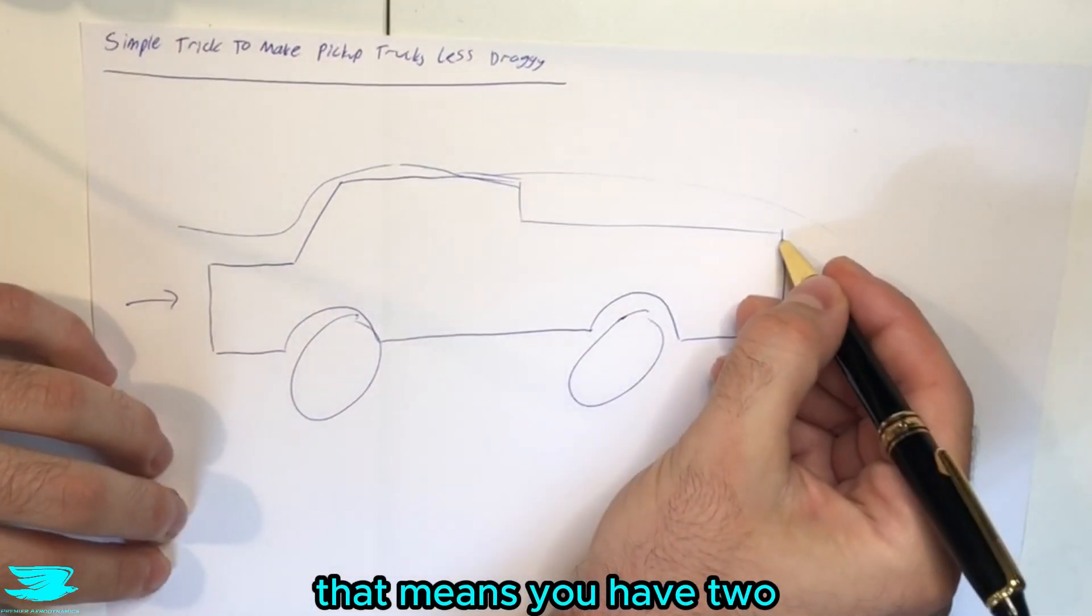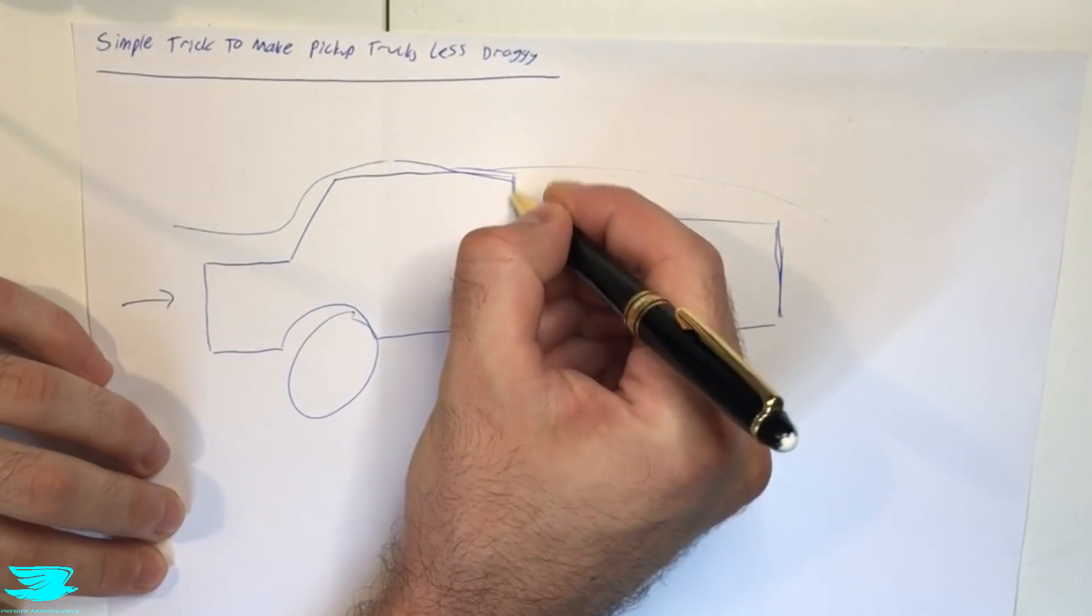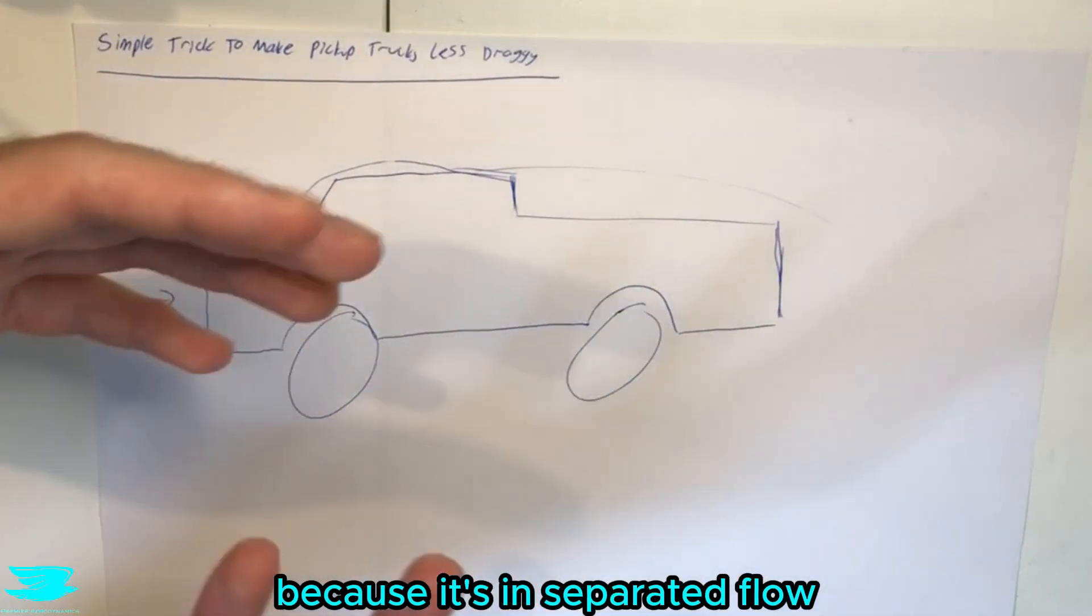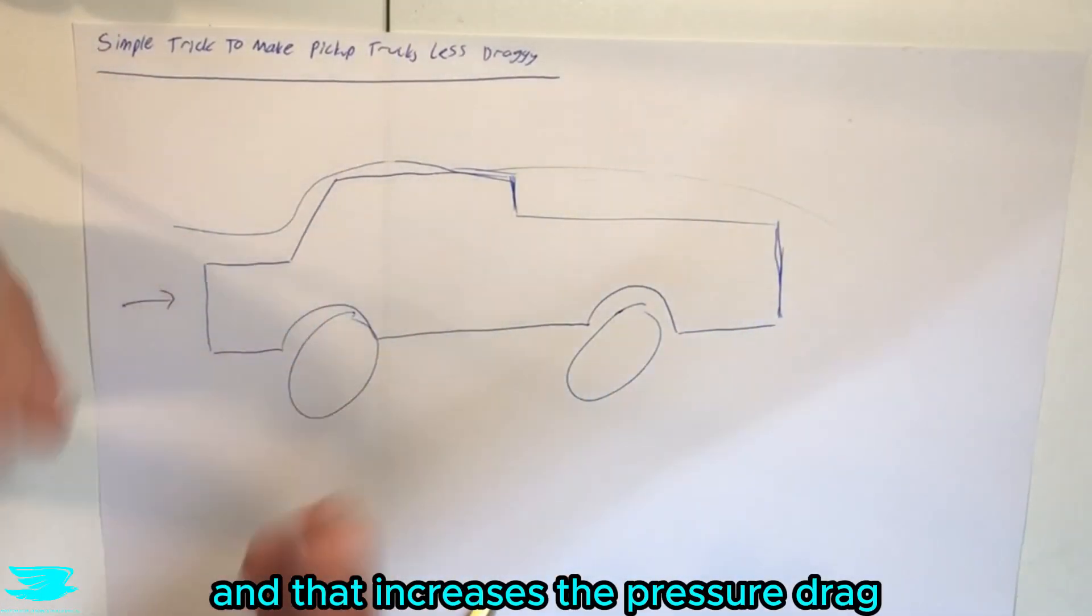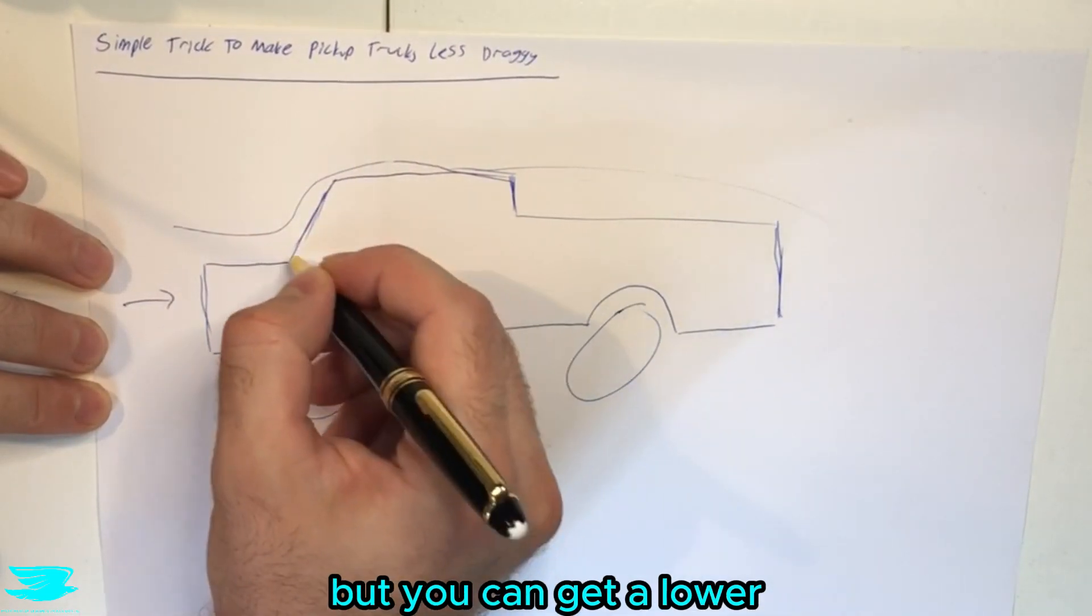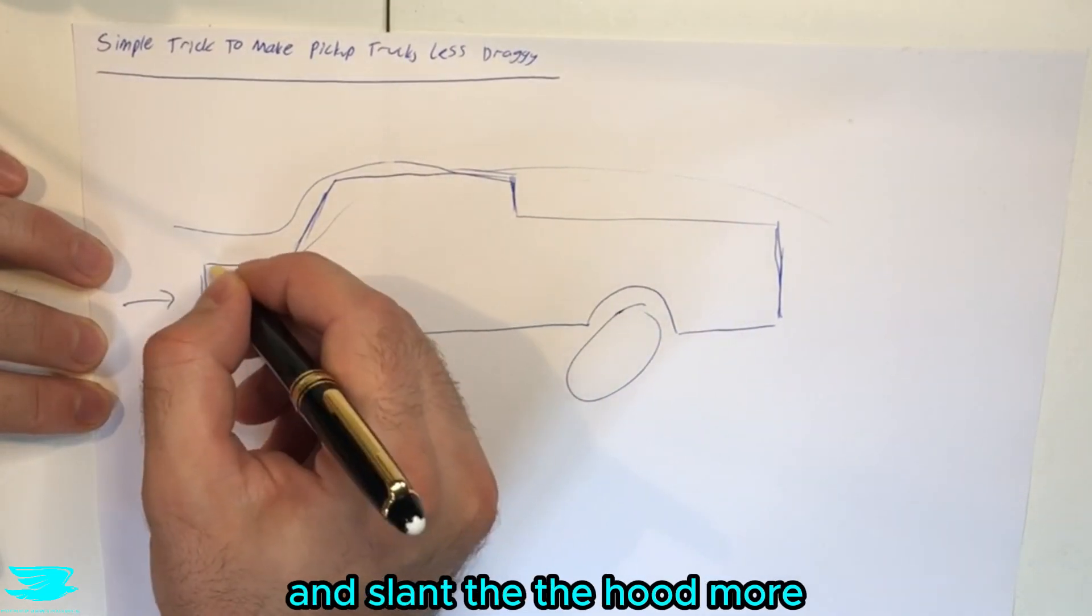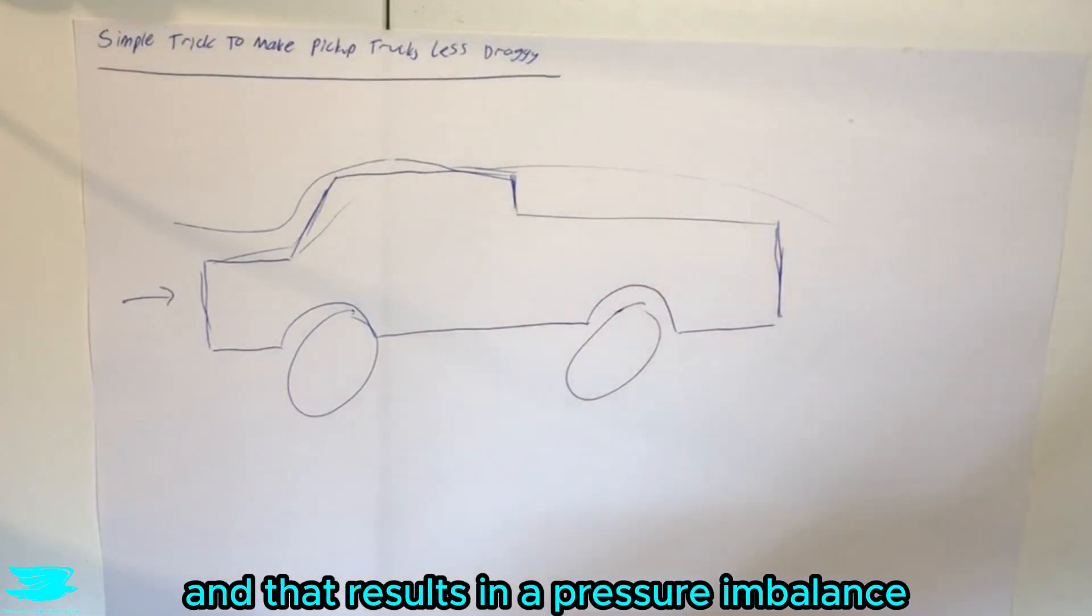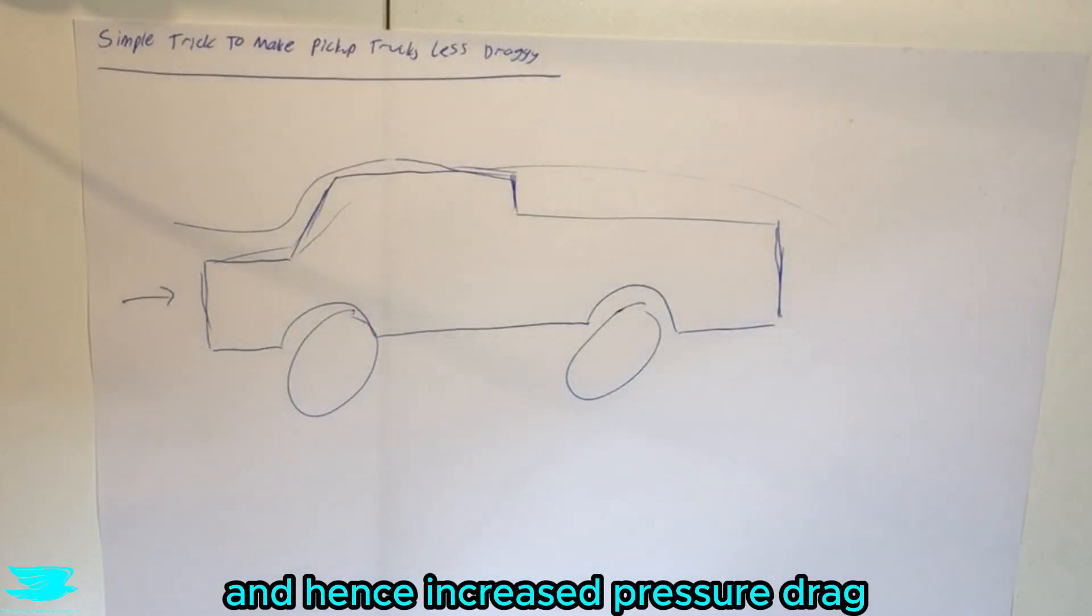That means you have two quite large faces that are seeing relatively low pressure because it's in separated flow and that increases the pressure drag because you have high pressure at the front here, pretty high pressure on the front but you can get lower pressure if you slant it more and slump the hood more and then you have high pressure on the back and that results in a pressure imbalance and hence increased pressure drag.